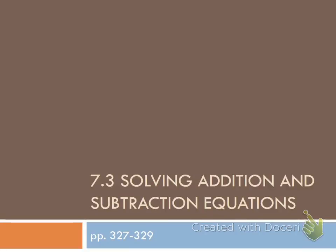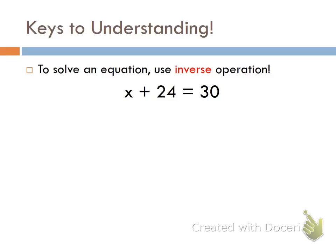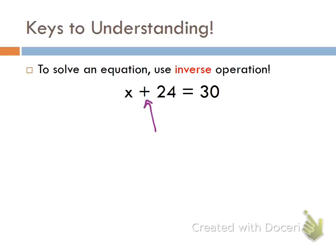We're in section 7.3, solving addition and subtraction equations. The key to understanding this concept: to solve an operation, use the inverse operation — the opposite. The inverse of addition is subtraction, and the inverse of subtraction is addition. The inverse of multiplication is division, and vice versa — we'll learn those tomorrow. Whatever operation is connected to the variable, we do the opposite. Our goal is to get the variable by itself on one side of the equation.